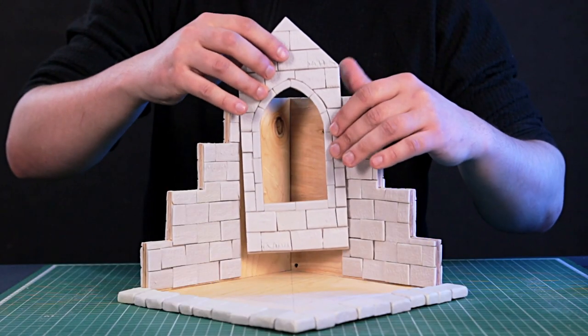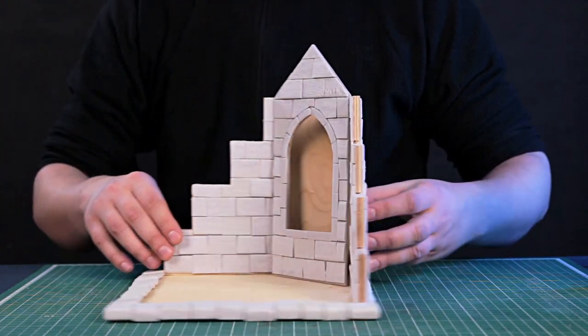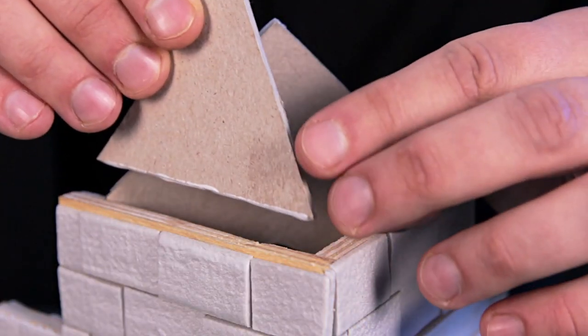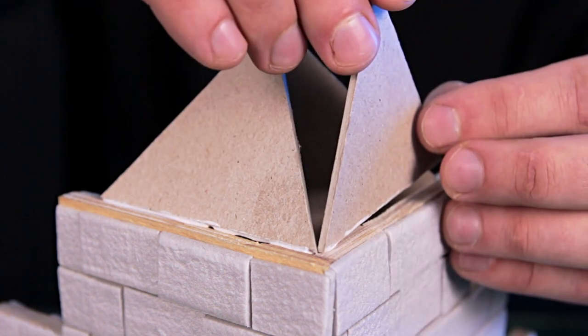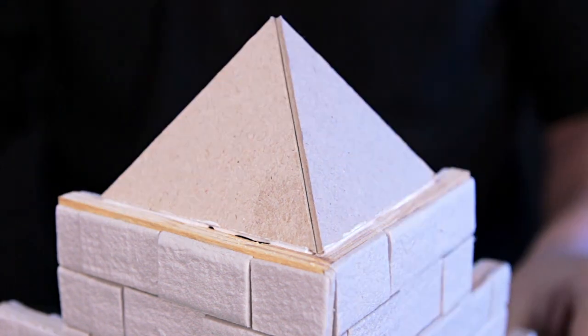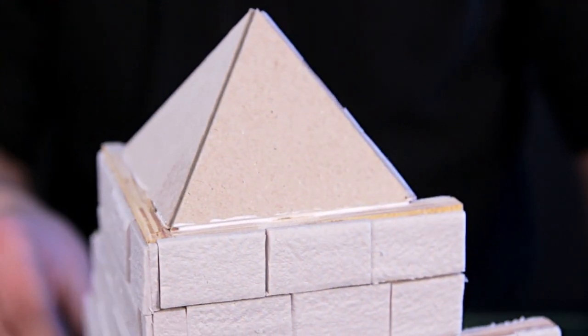This part fits snugly into place. The space behind the window should be closed by 2 triangles. You get something like a roof. Note that I do not glue the wall with the window, only the triangle.